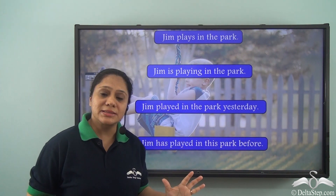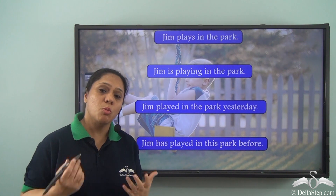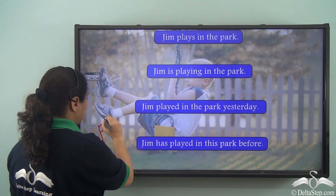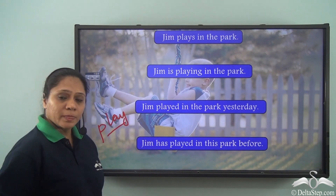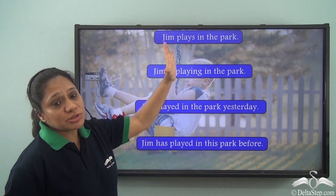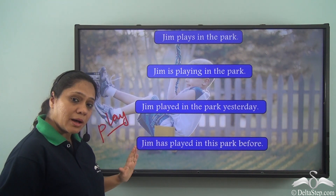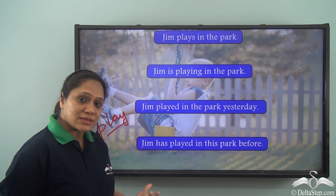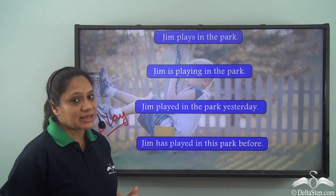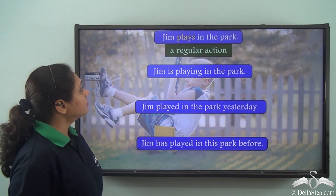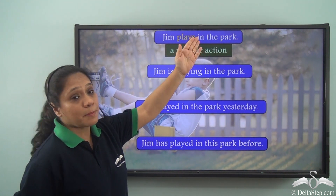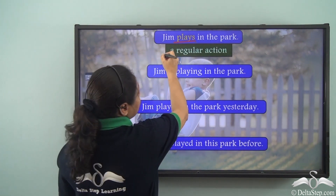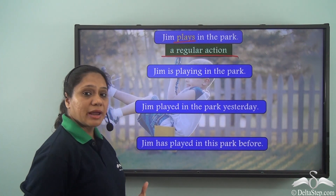All these sentences talk about the same action. The action is play. So the base verb in all these sentences is play, and we have used various forms of the base verb to denote different meanings. When I say Jim plays in the park, the verb 'plays' refers to a regular action, something which happens regularly.